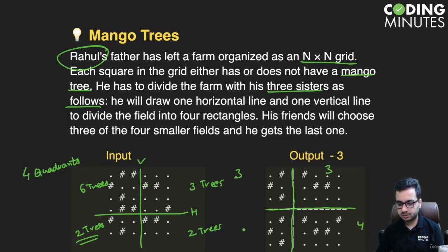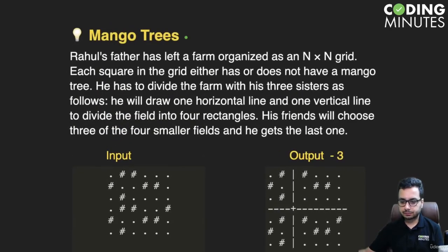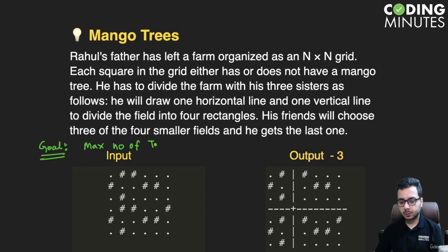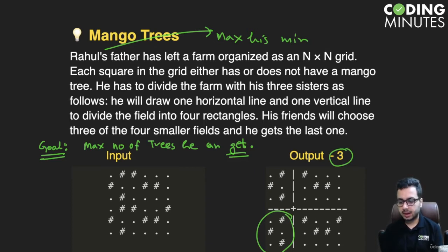With this cut he gets three trees, three trees, four trees, and three trees. So instead of getting two trees he can actually get three trees by making a cut like this. The goal of the problem is: you need to tell what is the maximum number of trees he can get. In this case the output is three — he can ensure he gets three mango trees.